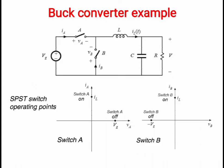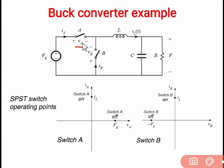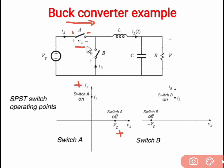Now we look at how the switch is selected based on operation requirements. Consider the example of a buck converter. In a buck converter there are two switches — switch A and switch B — along with components L, C, voltage source, and load R. If switch A is open, the full voltage Vg appears across its two terminals as Va — positive voltage. While switch A is on, it conducts positive current from terminal 1 to terminal 2. So switch A operates in the first quadrant.